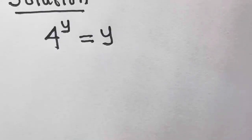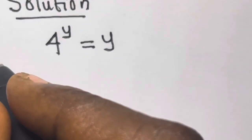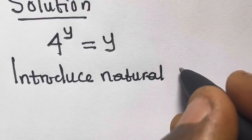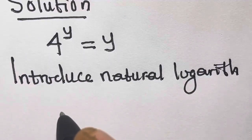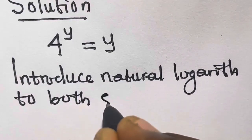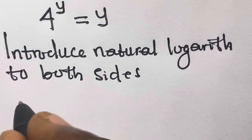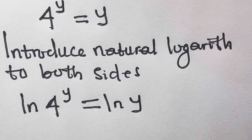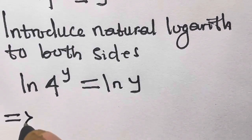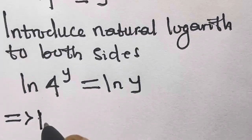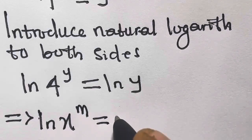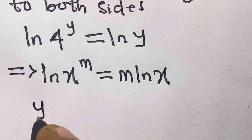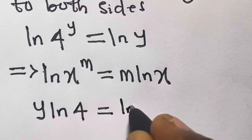From here we can introduce natural logarithm to both sides. So if you do that you are going to have ln(4 times 2^y) equals ln(y). From here we recall that if we have ln(x^m) this equals m·ln(x). So applying this, we are going to have y·ln(4) equals ln(y).